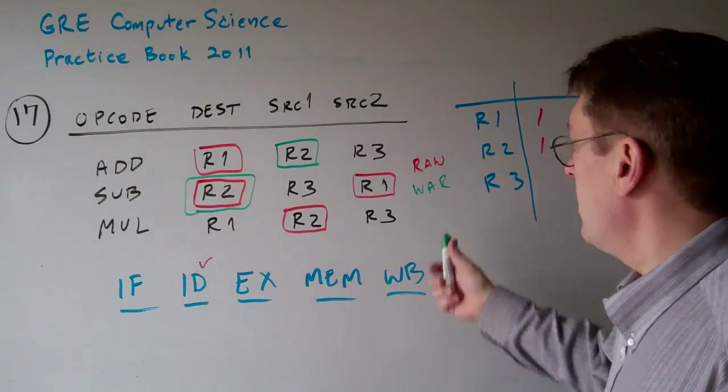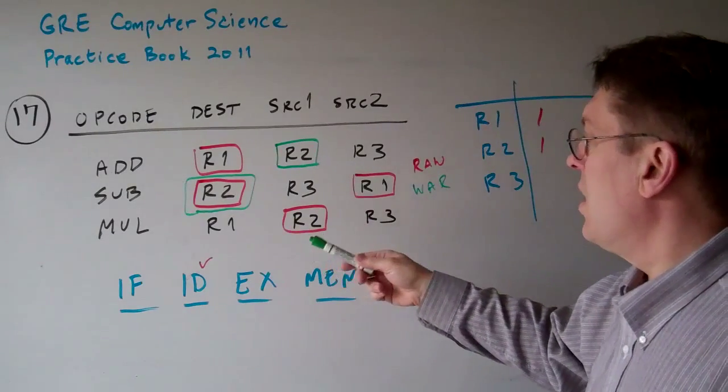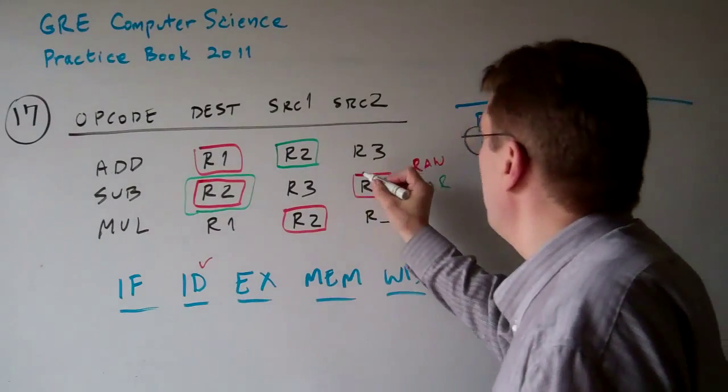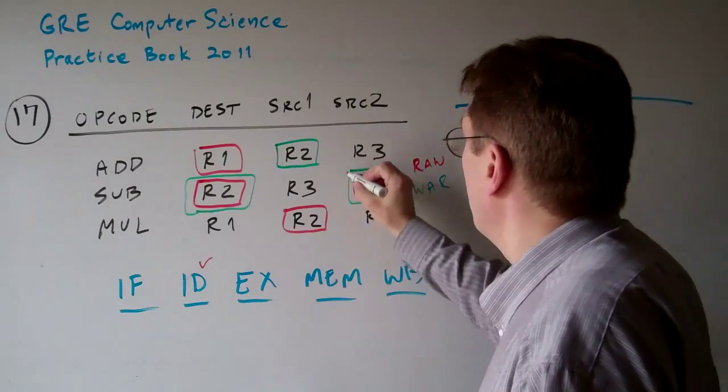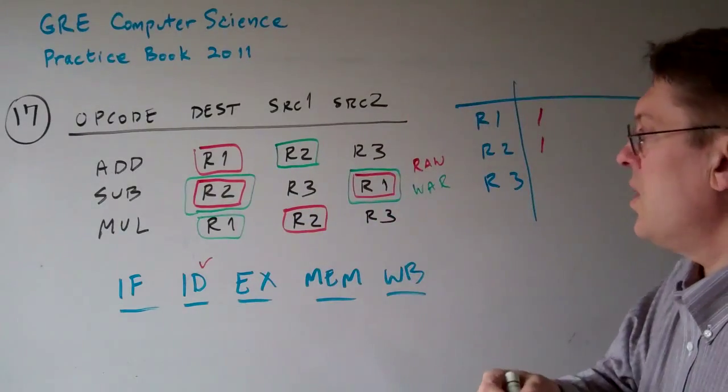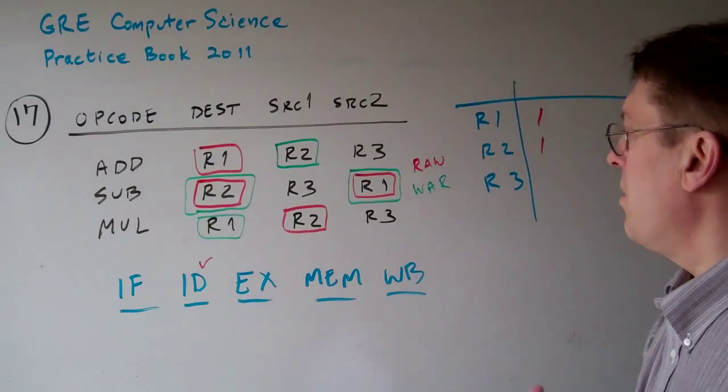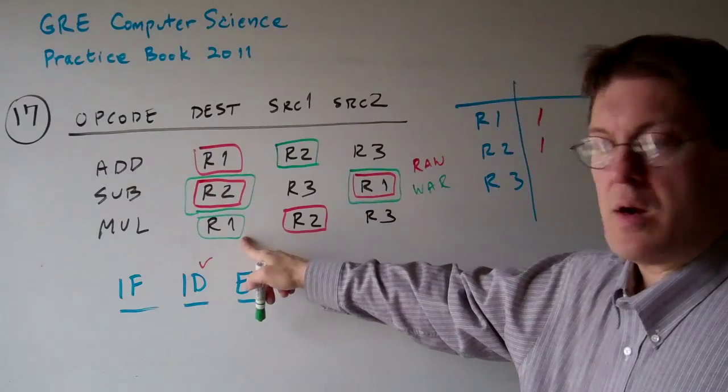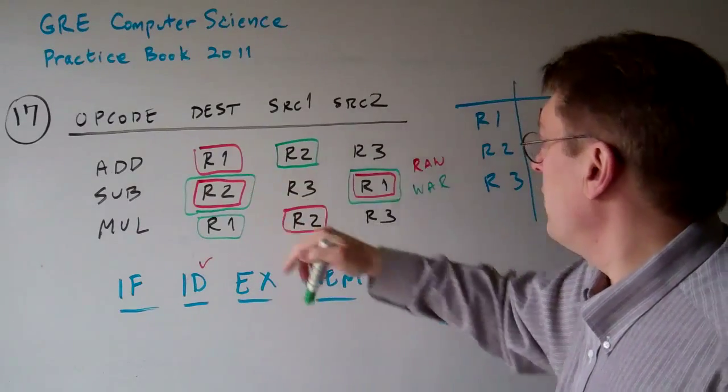So you're writing a register after it's been written. The problem is the same basic thing. You're reading register 1, but you're going to write to it here. How do you know those two aren't conflicting?